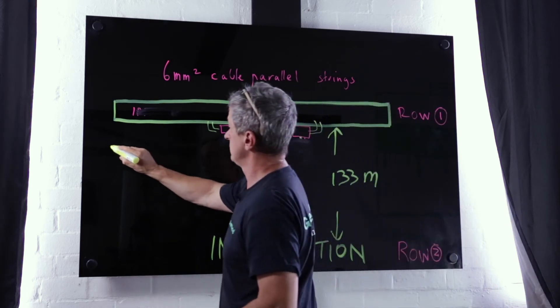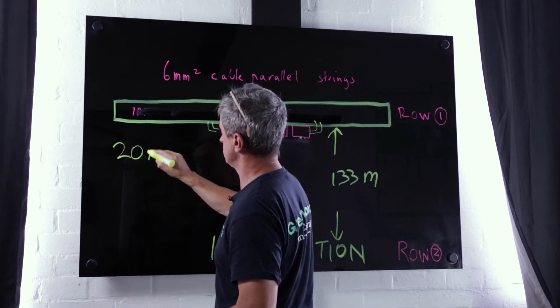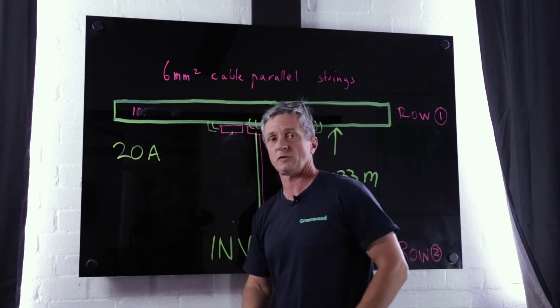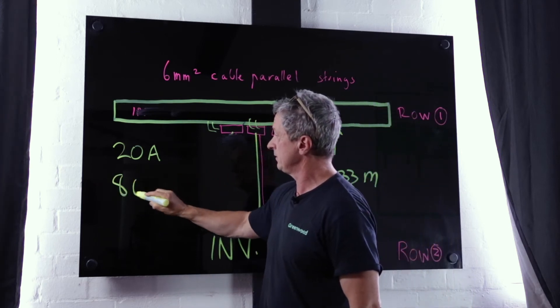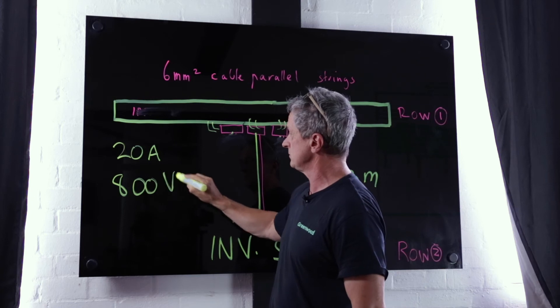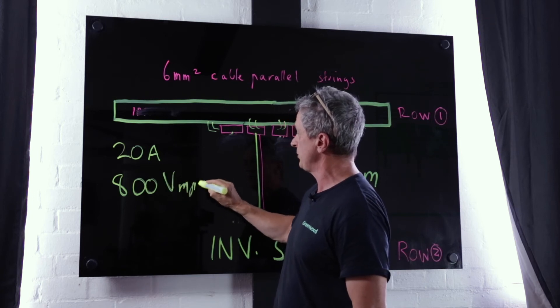We're still looking at 800 volts maximum power point. And we're looking at a distance of 133 meters for the worst case scenario run.